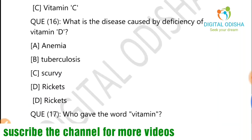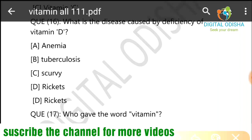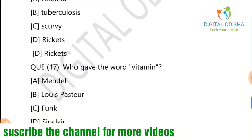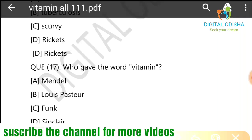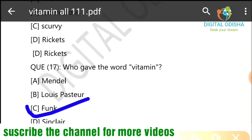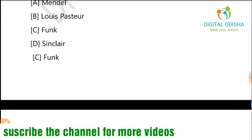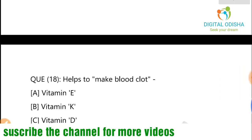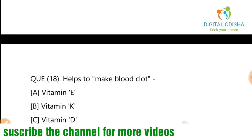What is the disease caused by deficiency of Vitamin D? The answer is rickets. What vitamin helps make blood clot? Vitamin K helps in blood clotting.